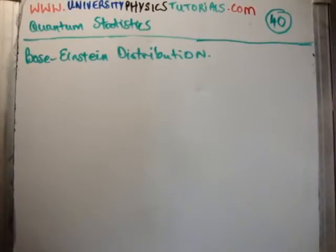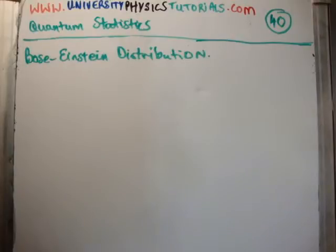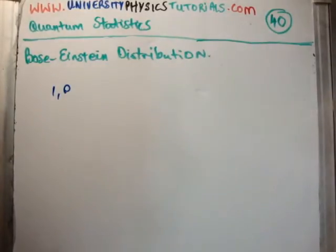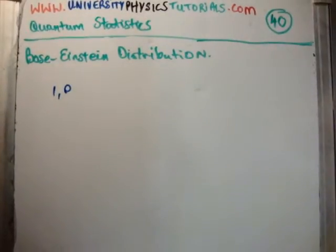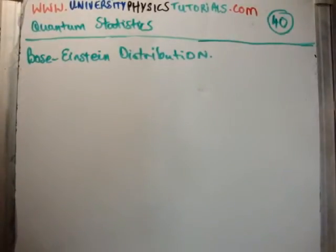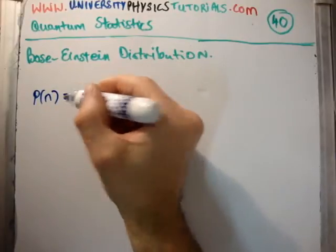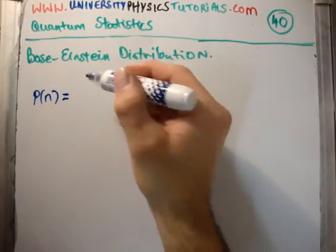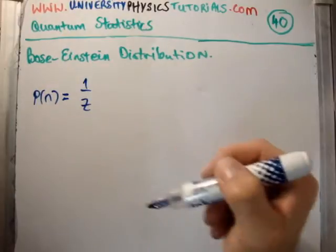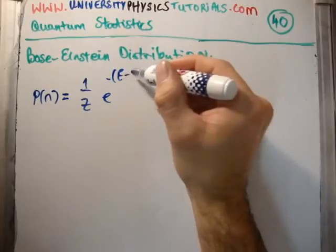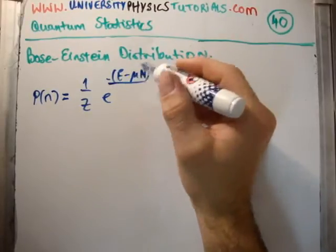So, bosons. The definition of a boson is something with integer spin. But in terms of occupying states, there is no restriction on the number of bosons per state. Whereas with fermions, there could only be one or zero particles in a state — with bosons, that isn't the case. The probability using the Gibbs factor and the grand partition function is equal to 1 over the grand partition function times e to the minus the energy minus the chemical potential times the number of particles divided by kT.